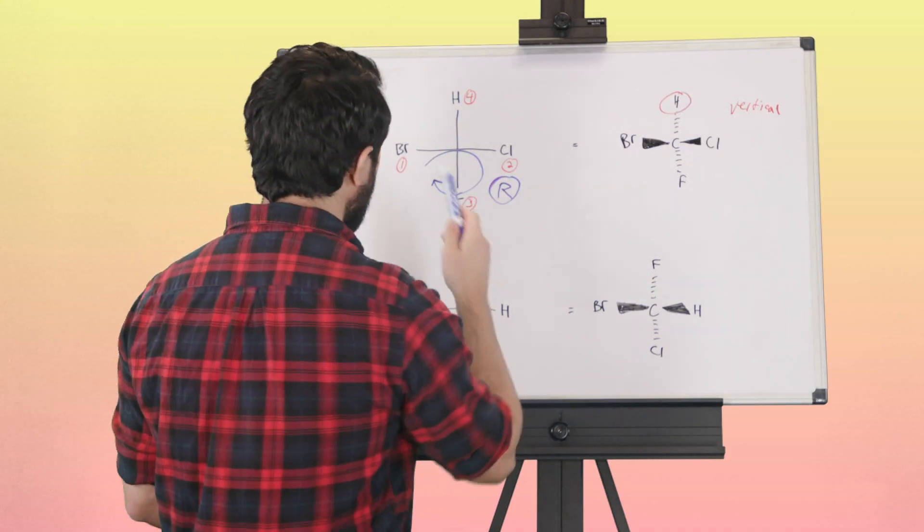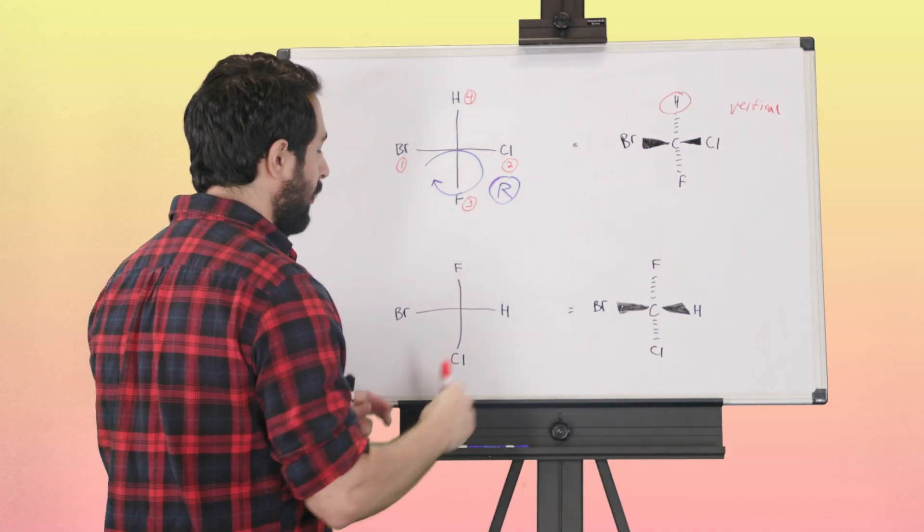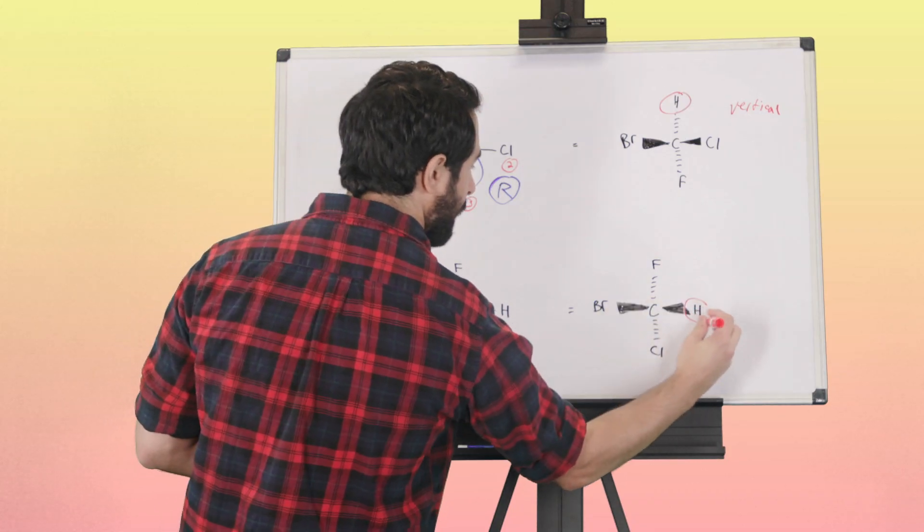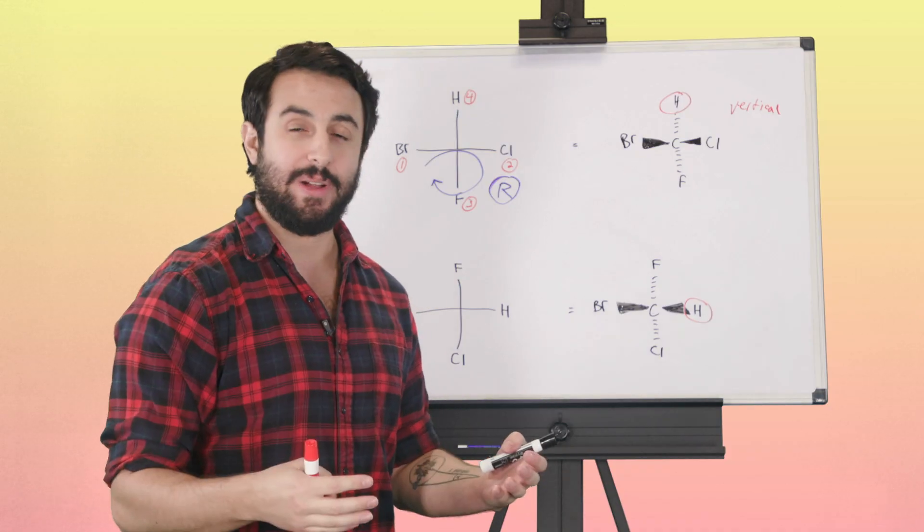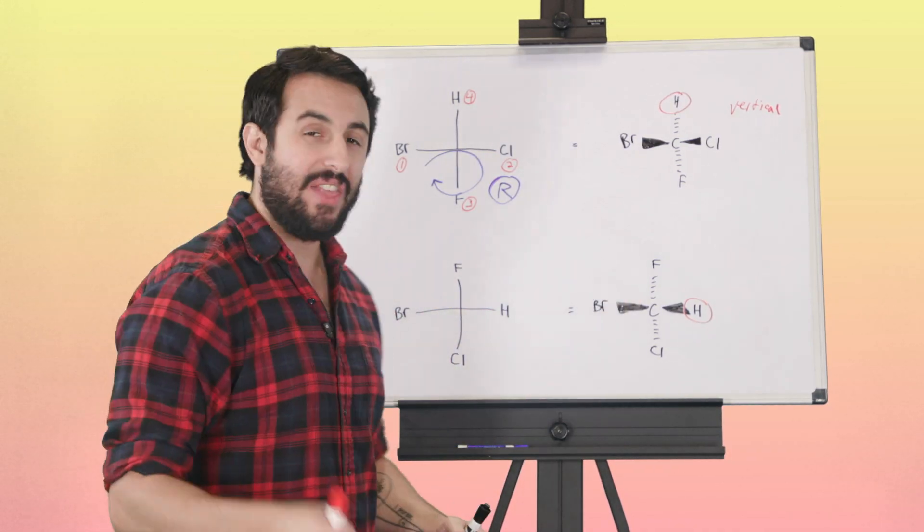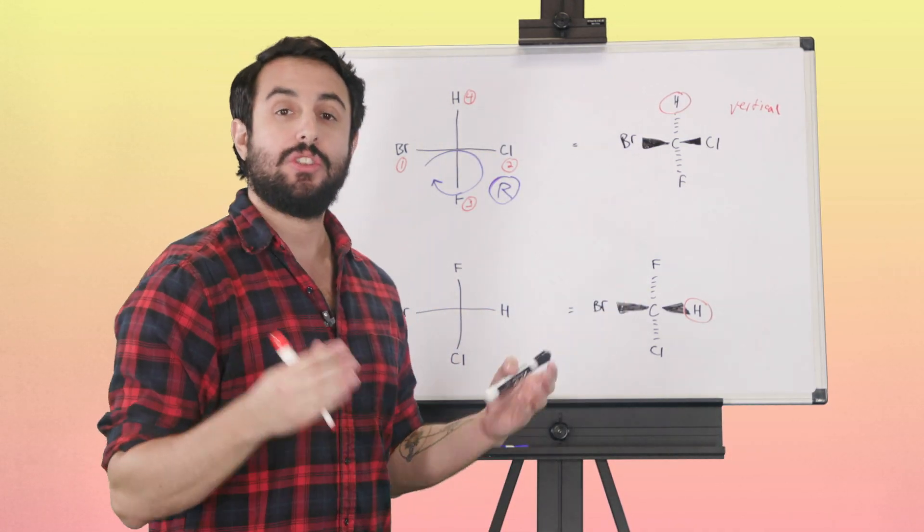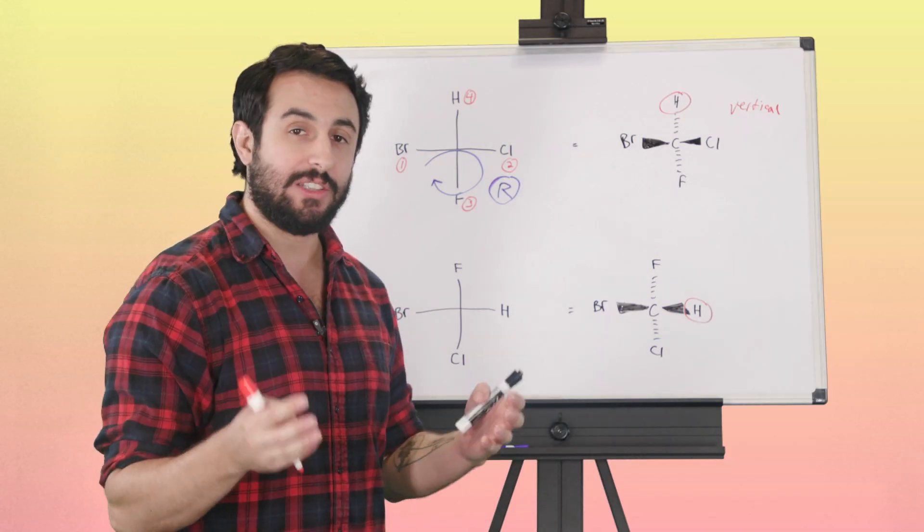Here's the case where the lowest priority group is on a horizontal bond. If the lowest priority group is on a horizontal bond, that is implied to be a wedge bond, and that is not facing away from us. In such a case, we just do our regular trick.